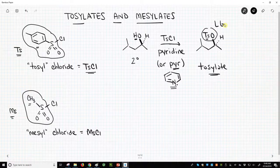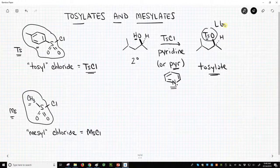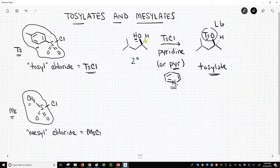So now once we form our tosylate, we can perform any of our substitutions and eliminations on this particular molecule because we've now converted our poor leaving group, alcohol, into a good leaving group, the tosylate.